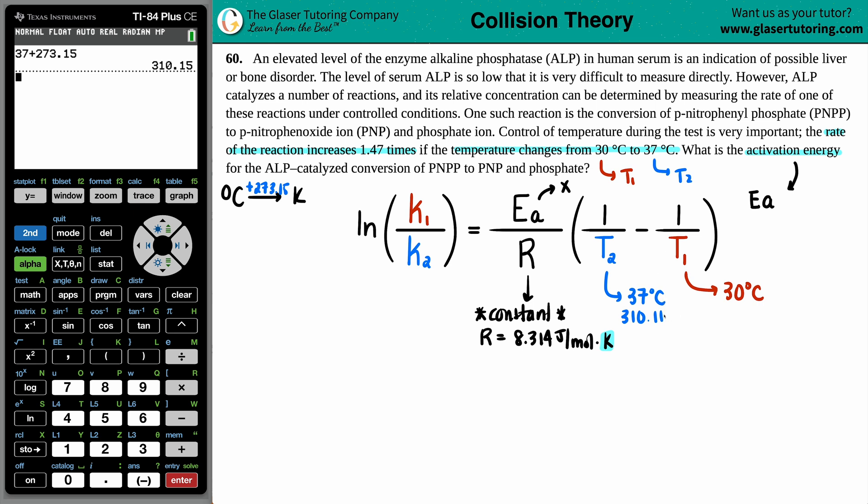Hold on, hold the phone there. There we go, 310.15 Kelvin. And then 30 plus 273.15 is 303.15. So now this is all settled, 303.15.